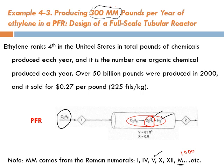Is ethylene really important? Yes — ethylene ranks fourth in the United States in total pounds of chemicals produced each year and is the number one organic chemical produced in terms of quantity. Over 50 billion pounds per year were produced in 2000, and it sold for $0.27 per pound, meaning about 225 fils per kilogram.